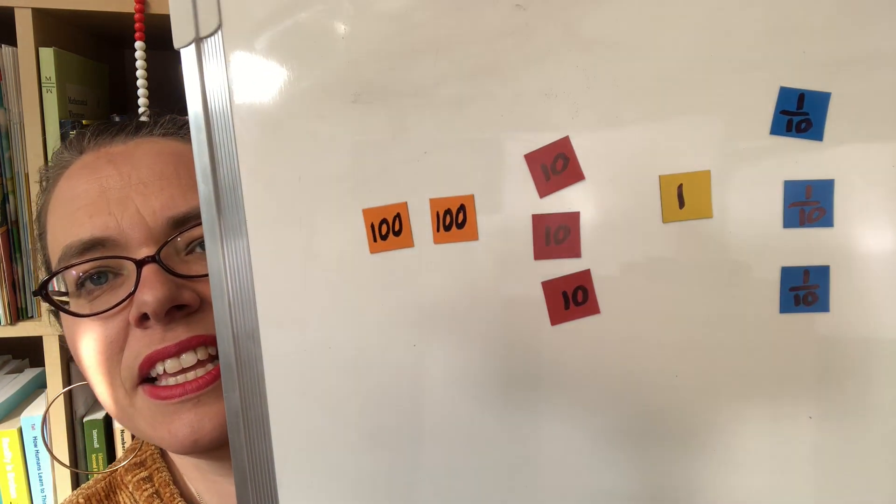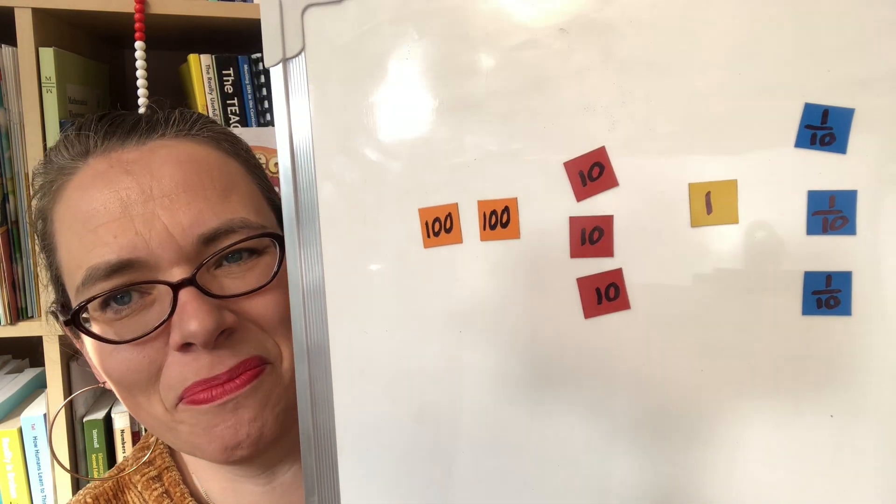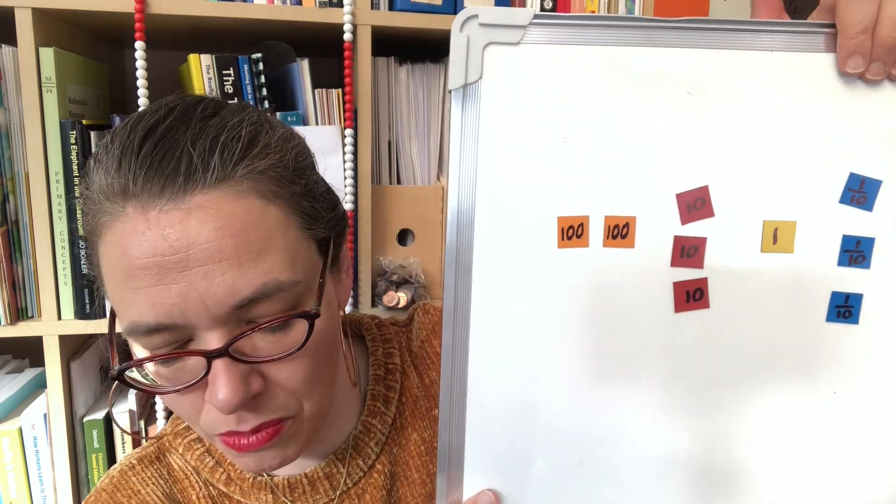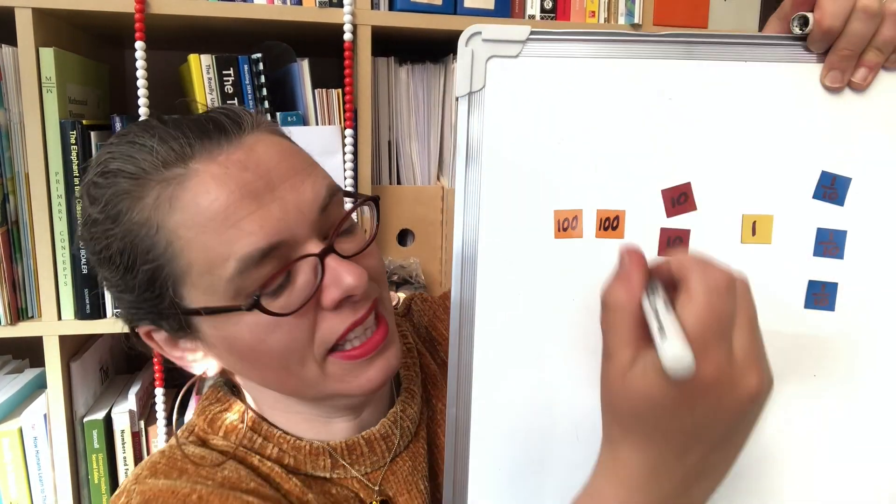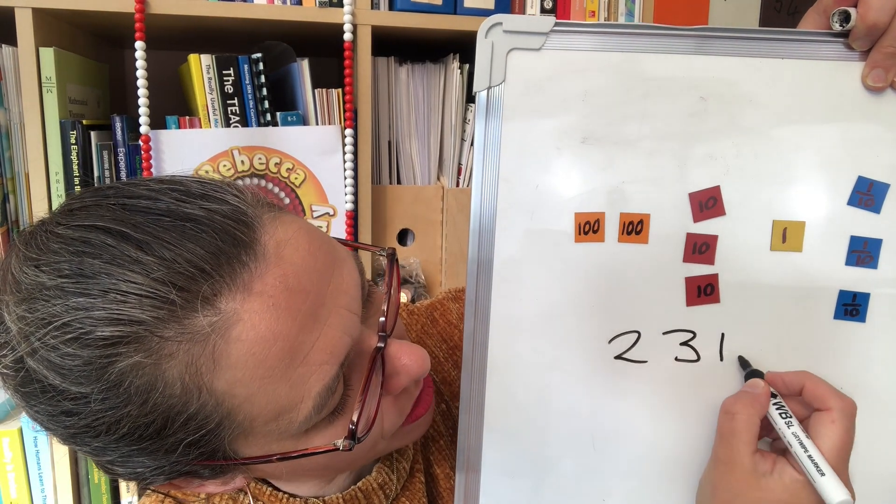So if you had the number 326.1, they would need 3 one-hundreds, 2 tens, 6 ones, and 1 one-tenth — which on the back is one tenth. Of course you can make these out of coloured paper, and just to prove how easy it is to make your own place value counters, I've even made some magnetic ones. If you look carefully at these, the blue ones say one tenth. We would hope that a child would be able to puzzle out that this number here is 231.3.